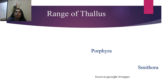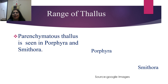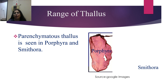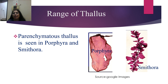In the range of thallus, you saw from coccoid forms to filamentous to branched to dichotomous leaf branching to multiaxial to corticated species — there is a lot of range in the thallus. Now there is also parenchymatous thallus, seen in Porphyra and Smithora. See how Porphyra looks — just like a paper. And Smithora looks like an angiosperm plant, but it is not. This is the highest range of thallus you can encounter in red algae.